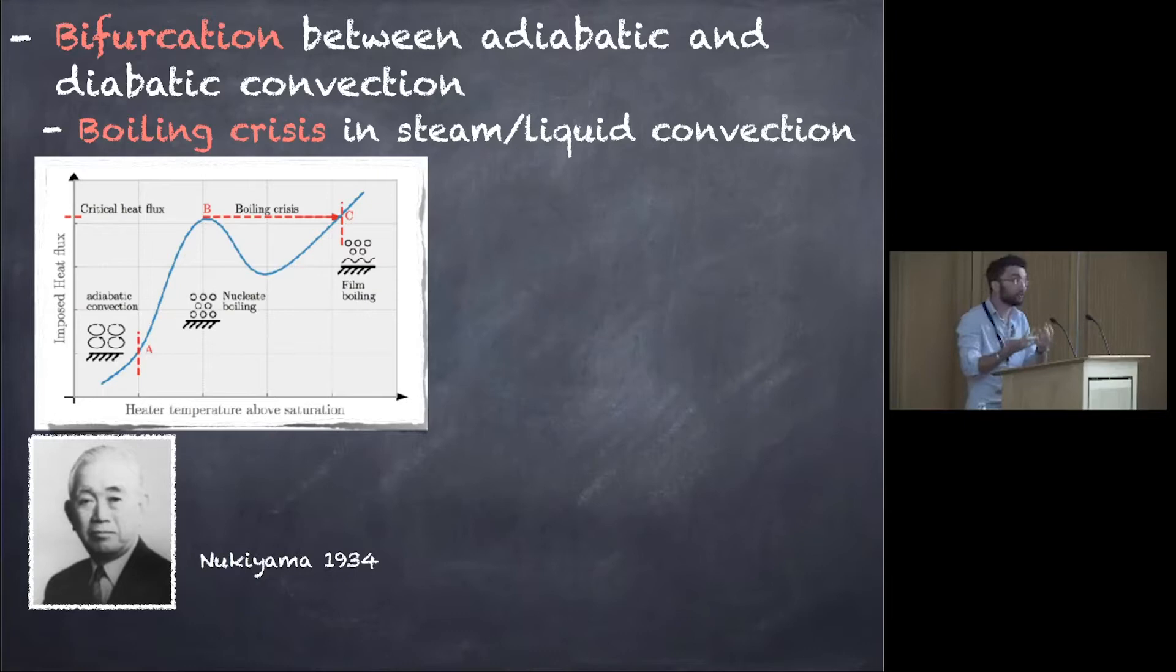The problem is that at some point, there's a little problem that you can form a complete water vapor film around your heating plate. And then convection is going to start to be really, really inefficient and you have a complete transition back to adiabatic convection into the film.